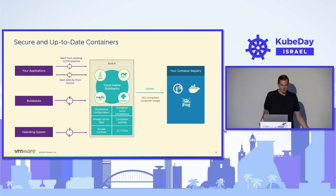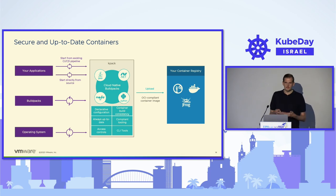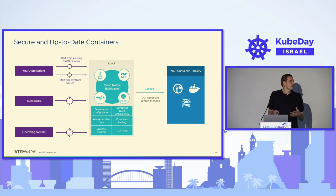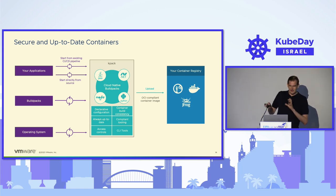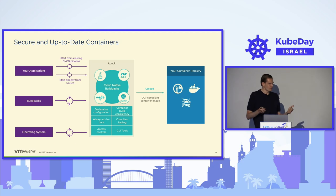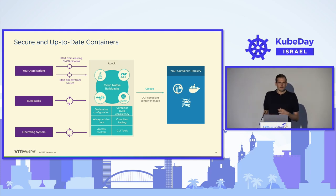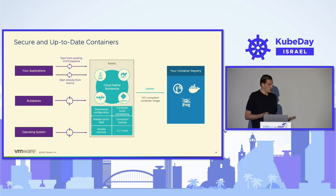Now we have a container image built for us. The next step is running the application. We could create a deployment, service, and ingress, and it would be running fairly easily. But again, we have to apply a lot of best practices — like defining the security context — and that's something developers typically don't have the expertise for. It's actually even difficult for operators with more Kubernetes expertise. So we want to use a higher abstraction on top of Kubernetes to run our application.